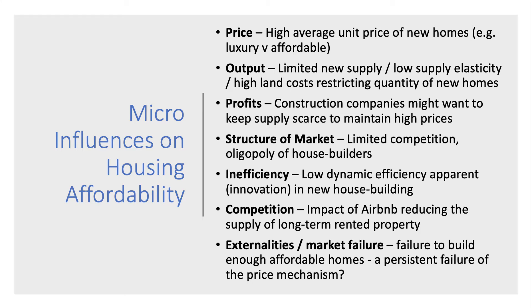A really interesting aspect in many cities has been the growth of Airbnb — the platform for letting out property to tourists and visitors. Some people claim that rapid Airbnb growth has reduced the supply of long-term rented property, as homeowners shift to short-term lets, reducing the number of homes available for long-term tenants and driving prices up. There's also the wider systemic issue of market failure — has there been a failure to build enough affordable homes, and is there government failure as well as market failure?